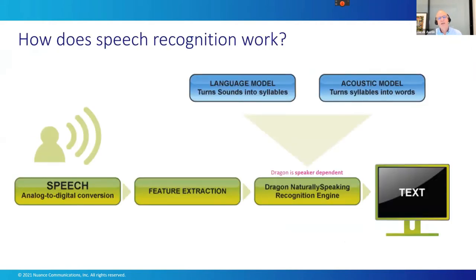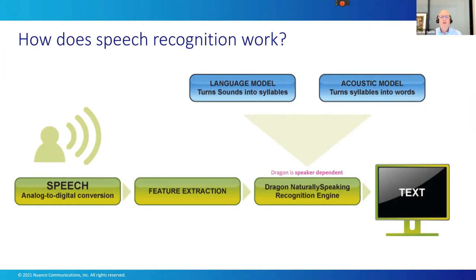Speech recognition starts with the speech — the waveforms in the air — which get turned into ones and zeros, digitized. The software pulls out the syllables that your language uses. English has a particular set of syllables; Australian English is even more specific. Those syllables are then turned into words using an acoustic model. Dragon is different from most speech recognition in that it's speaker-dependent — Dragon actually learns what you sound like and what you talk about. If you correct it when it makes a mistake, it will remember that error and get it right next time.